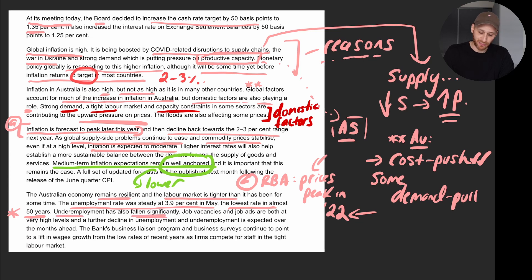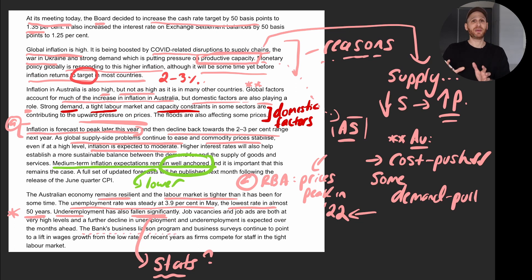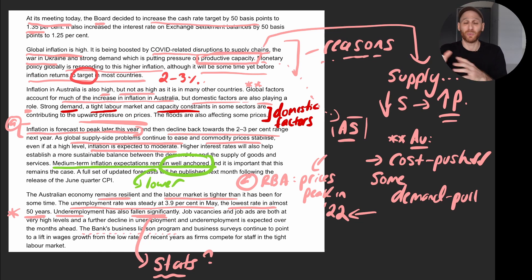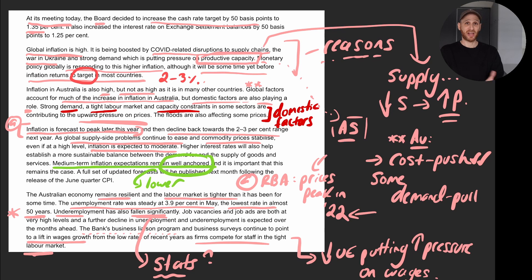Underemployment has also fallen significantly. The RBA's business liaison program — where they speak directly with firms about what's going on in their industry — continued to point to a lift in wages growth as firms compete for staff in the tight labour market. The really low levels of unemployment are putting upward pressure on wages.